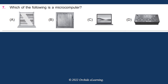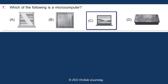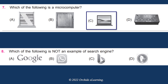Which of the following is a microcomputer? The answer is C and D. Which of the following is not an example of a search engine? The answer is B: WhatsApp.